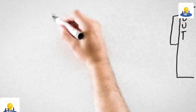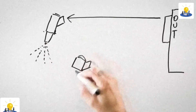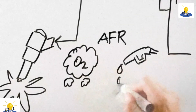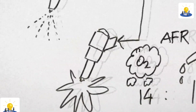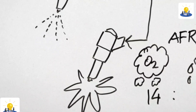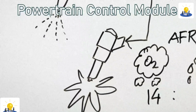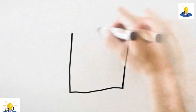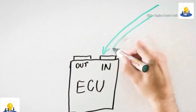In the automotive industry, the term ECU often refers to an engine control unit or an engine control module, ECM. If this unit controls both an engine and transmission, it's often described as a powertrain control module. For the purposes of this lecture, we will discuss the ECU as an engine control unit.